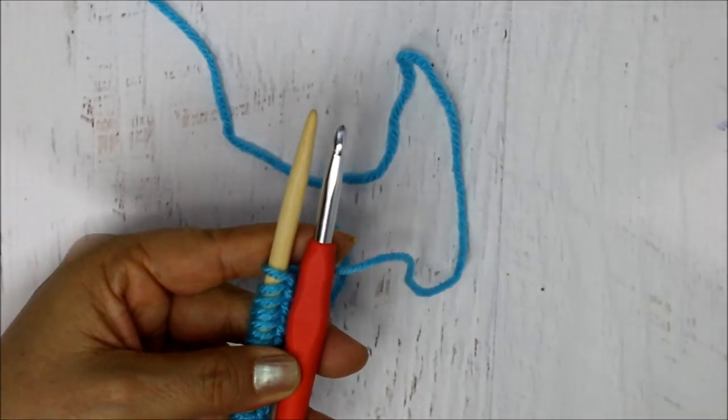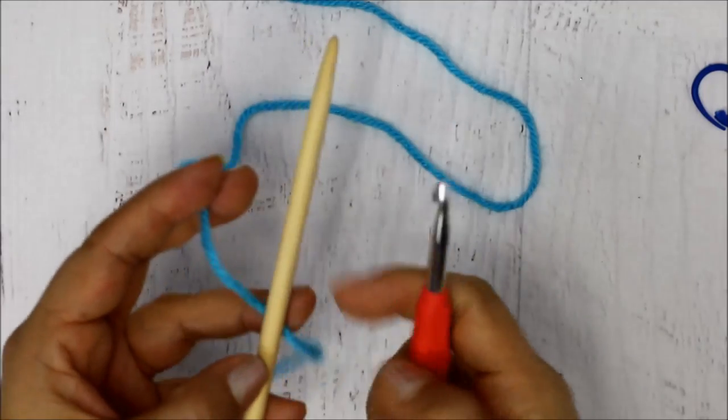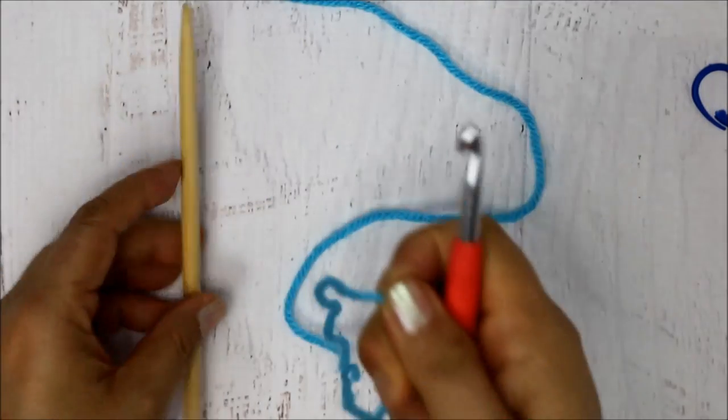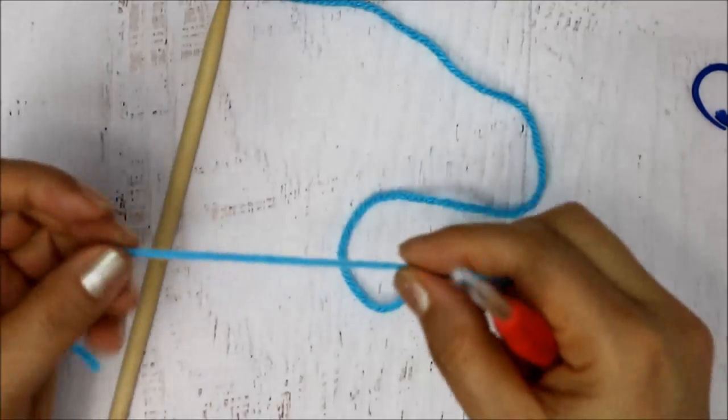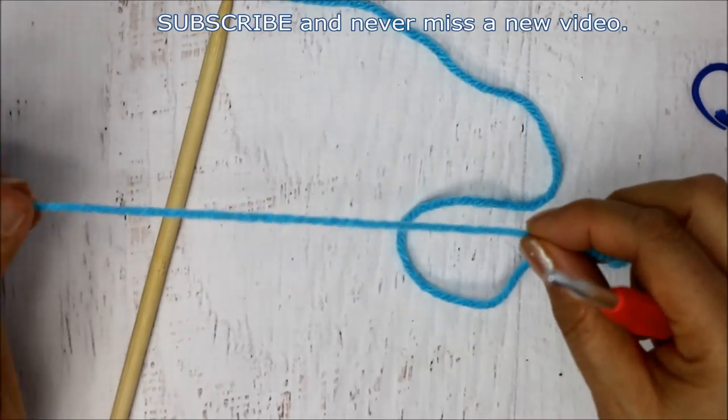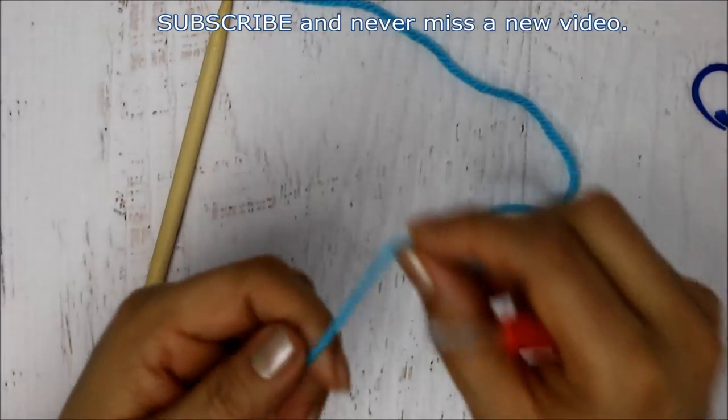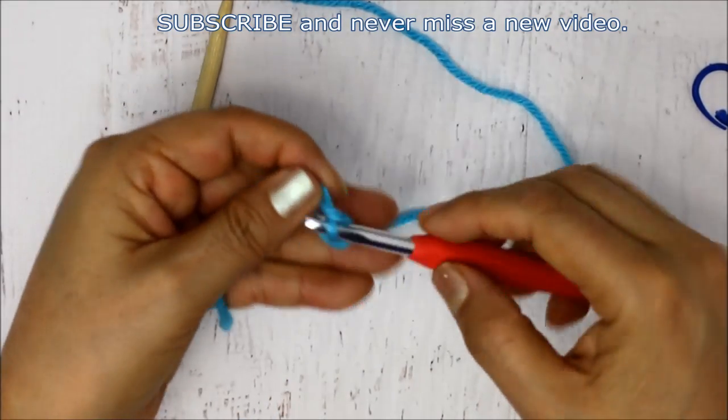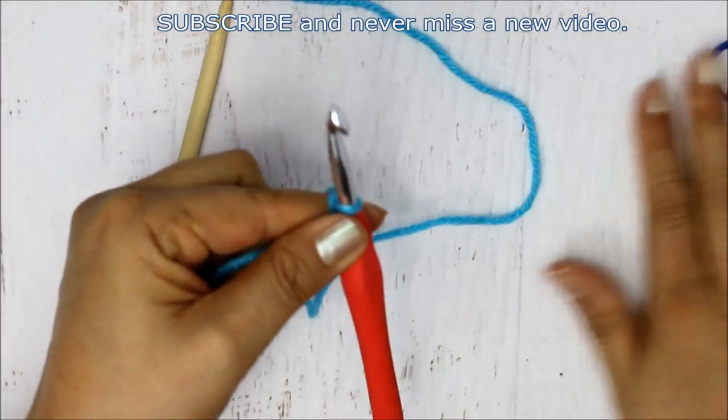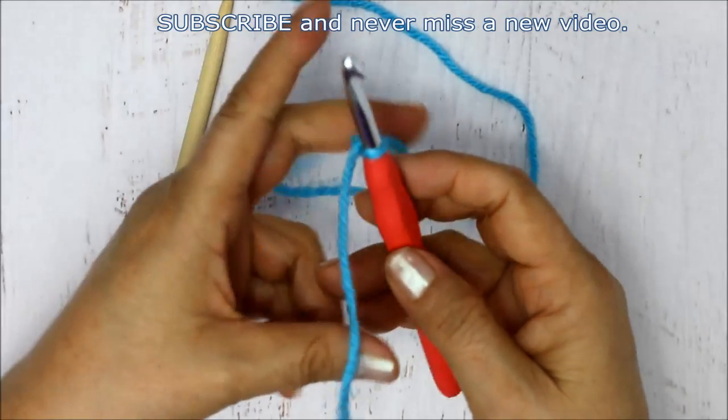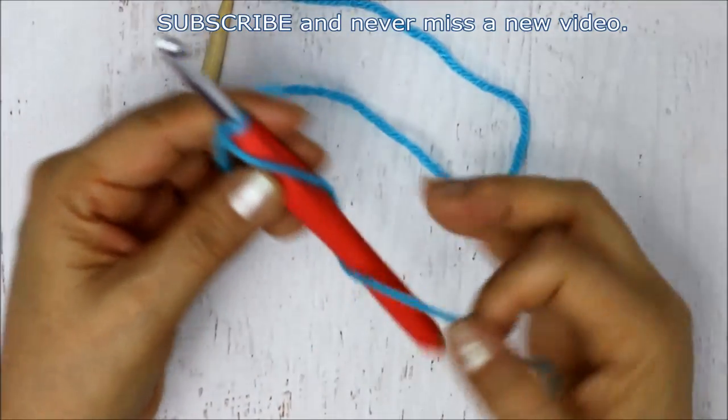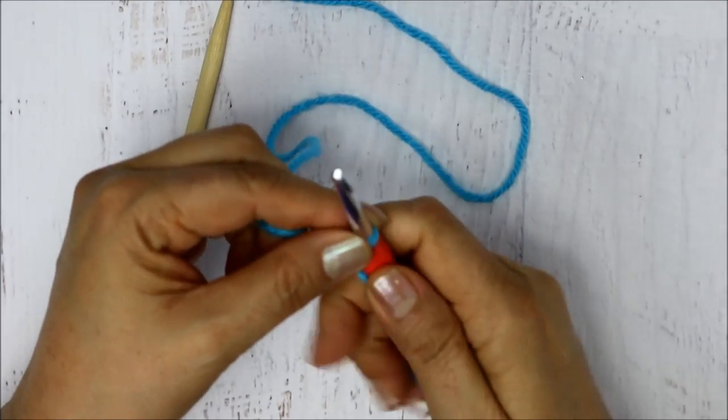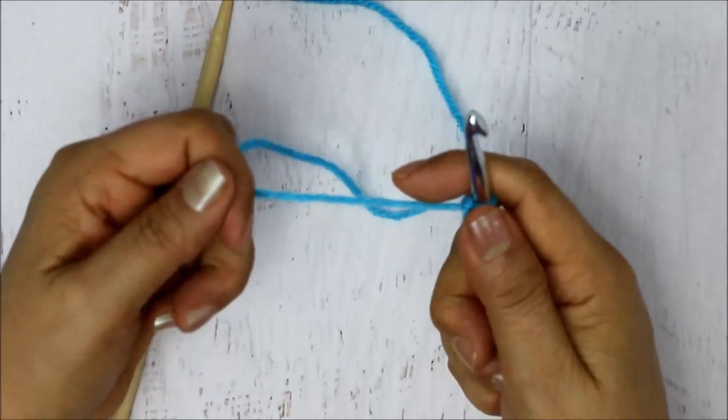So to begin the cast on, we're going to start with the hook. I still want you to leave a little bit of a tail so that it's easier to weave in at the end. You're just going to make a slip loop like you normally do and pull out your yarn on the crochet hook just like that. Now I like to get this tail, sometimes I'll wrap it like this just to keep it out of the way when I first start.